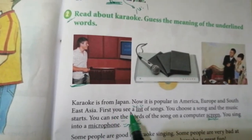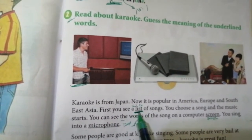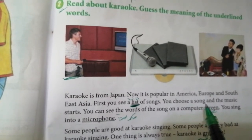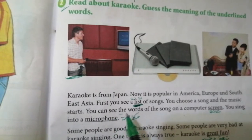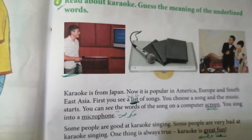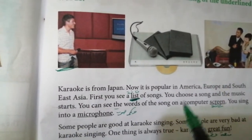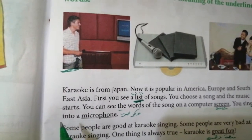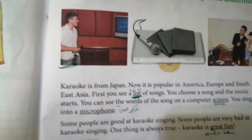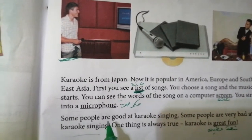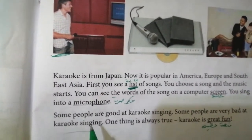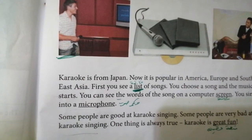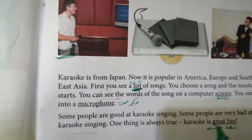First, you see a list of songs. A list — meaning a list of songs. You choose a song and the music starts. You can see the words of the song on a computer screen. You sing into a microphone. Some people are good at Karaoke singing. Some people are very bad at Karaoke singing. But one thing is always true: Karaoke is great fun.